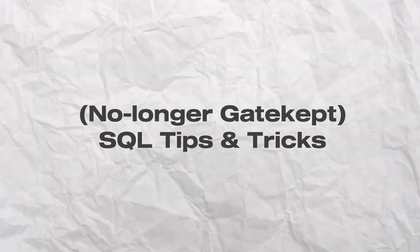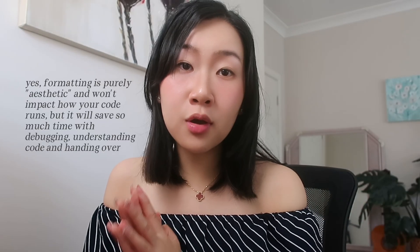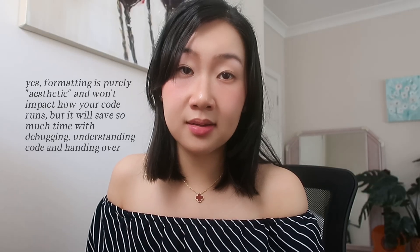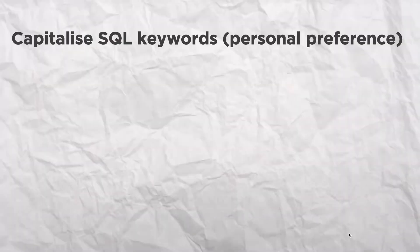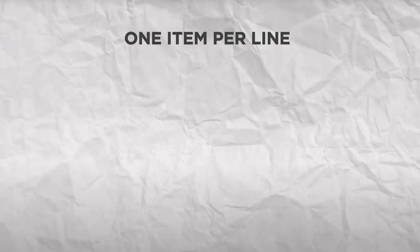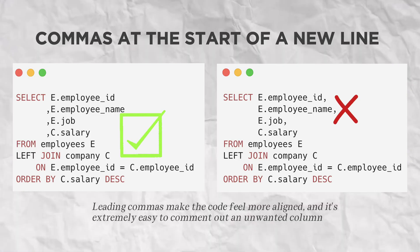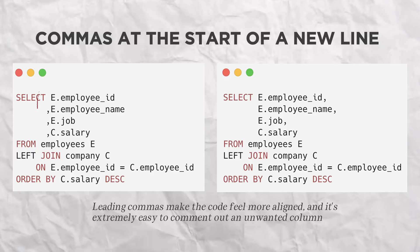Moving on to the final section — some of my most gate-kept SQL tips and tricks that really do make a key difference and are applicable to users of all levels. One of the most underrated things in coding is how you format your queries. It's purely for aesthetics, but it will make your code so much easier to read, debug, and hand over to colleagues. I love using all capitals for your keywords and table aliases, as it adds visual dimension and helps your eye differentiate parts of your query. Always one item per line — it just makes your code so much easier to follow. My next one is controversial, but I will always have commas at the start of every new line, making it easier to comment out every single line.